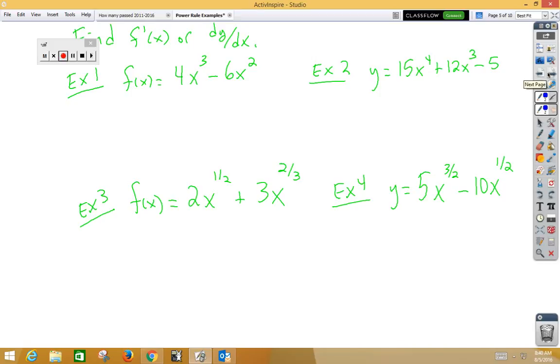First, if I want to take the derivative of 4x cubed minus 6x squared, I would go f prime of x is equal to 4 times 3 is 12, x subtract 1 would be squared, and then multiply negative 6 times 2 is negative 12x, 2 minus 1 is 1.